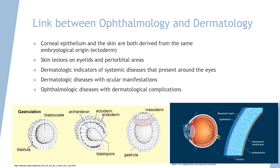The eye and the skin are closely linked since an embryological point in human life. The corneal epithelium and the skin are both derived from the same layer of embryological tissues called the ectoderm. Skin lesions on the eyelids and periorbital areas can develop specific diseases that also eventually affect vision.